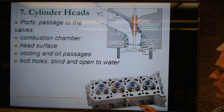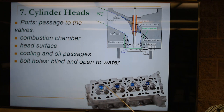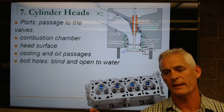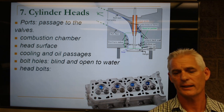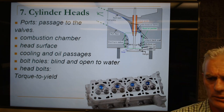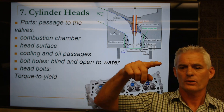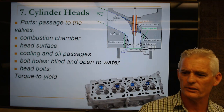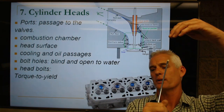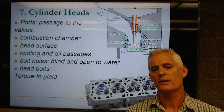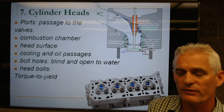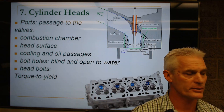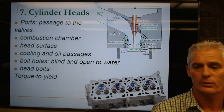Head bolt holes can be blind or open to coolant. Most engines have blind holes. Small block Chevys always went through the water jacket, so you always had to put sealer on the head bolt threads to prevent water from making its way out. We also have torque-to-yield head bolts, used for aluminum heads — you torque to say 15 or 25 ft-lbs, then turn an additional 90 degrees, then another 90 degrees. This achieves a bolt clamping force by actually stretching the bolt. The bolt has some percentage of elasticity that holds a clamping force on the cylinder head, giving a better seal with dissimilar metals like an aluminum head on a cast iron block.